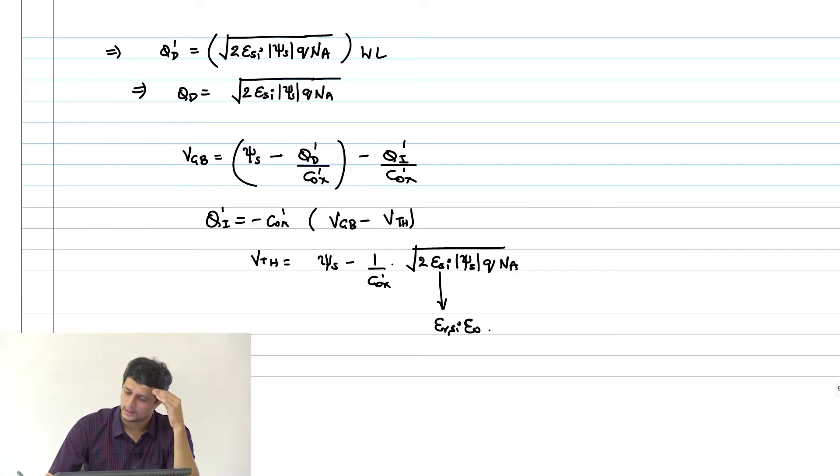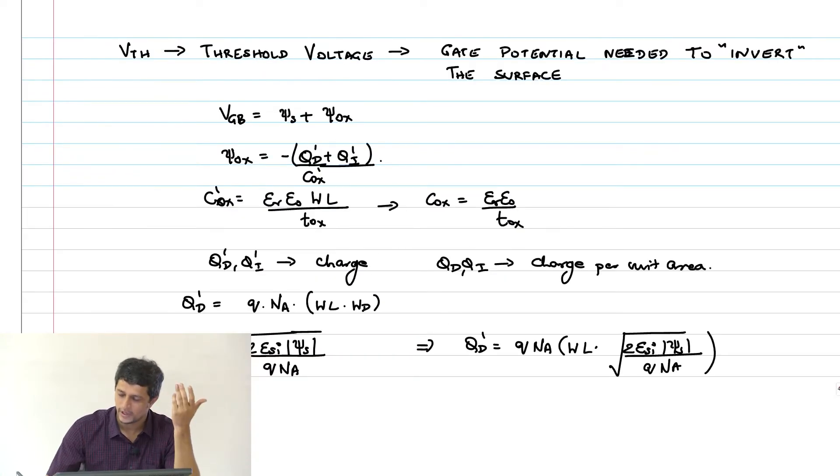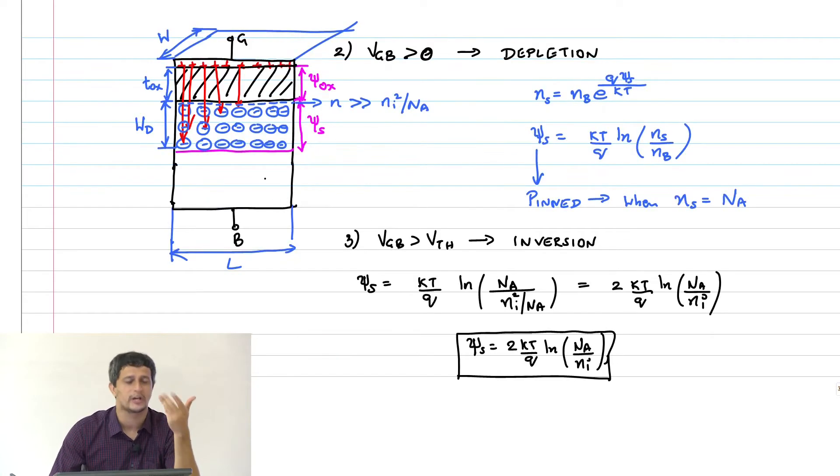So clearly, even after doing all of this and inverting the channel, I cannot still cause a current to flow through this device because there is an oxide on the top. Somehow the gate has created some free electrons, but I cannot do anything with it because there is an oxide on top and current cannot flow through the oxide - it is an insulator.